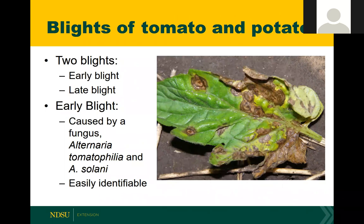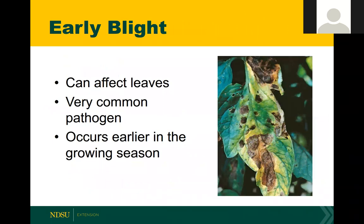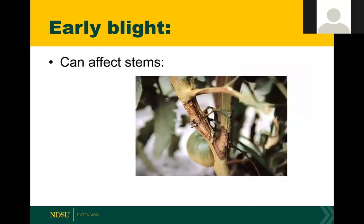Early blight produces large, easy-to-see lesions on the leaves. As you can see in the picture, they have concentric rings — kind of a bullseye pattern. This pathogen obviously can affect leaves, and it's very common. If you grow quite a few tomato plants, it's very likely you're going to get this pathogen. As its name suggests, it occurs earlier in the growing season. It can also affect stems, producing sunken cankers that will eventually expand to girdle the stem, and the portion of the plant upward from that infection will die.